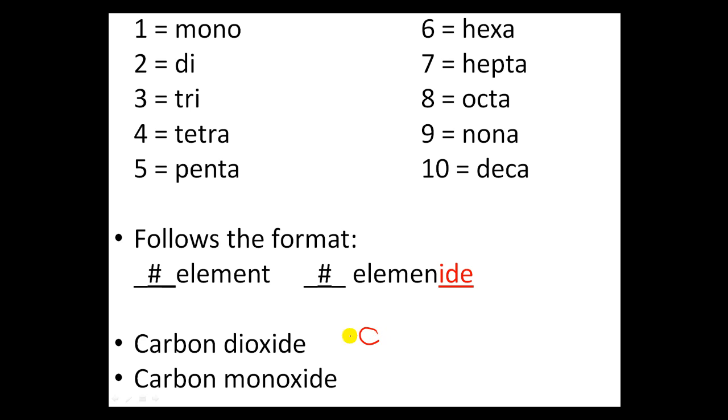For instance, over here we got carbon, so I write down carbon. I see oxide, so I know it used to be called oxygen. Now how many carbons are there? Because there's no prefix, I assume there's just one carbon. Over here though it says di, and di means two, so I write down two. Carbon dioxide, CO2.